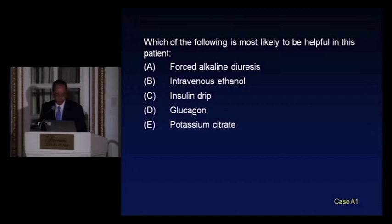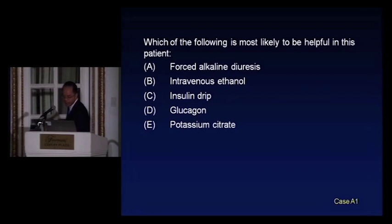The question is: which of the following is most likely to be helpful in this patient? Is it forced alkaline diuresis, IV ethanol, insulin drip, glucagon, or potassium citrate?